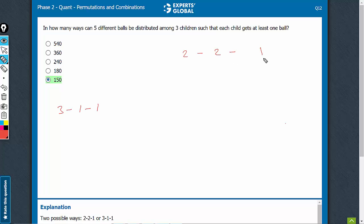In this case, imagine the child who gets one ball can be selected in three ways. Others get equal number of balls. So, no other case.